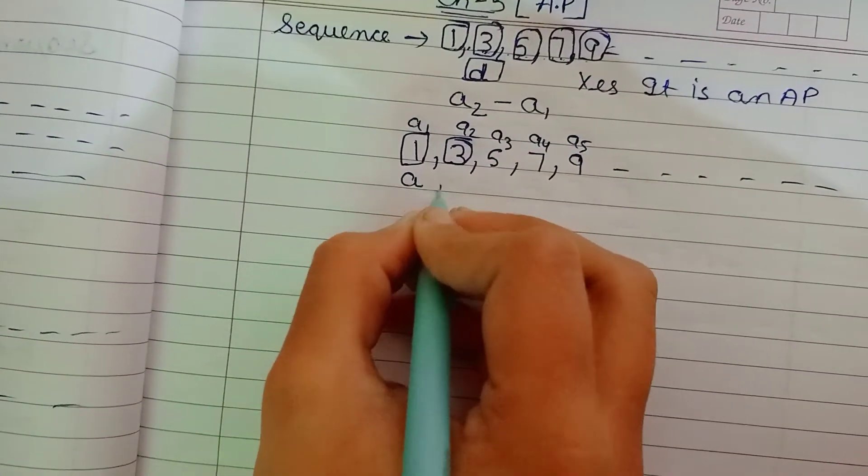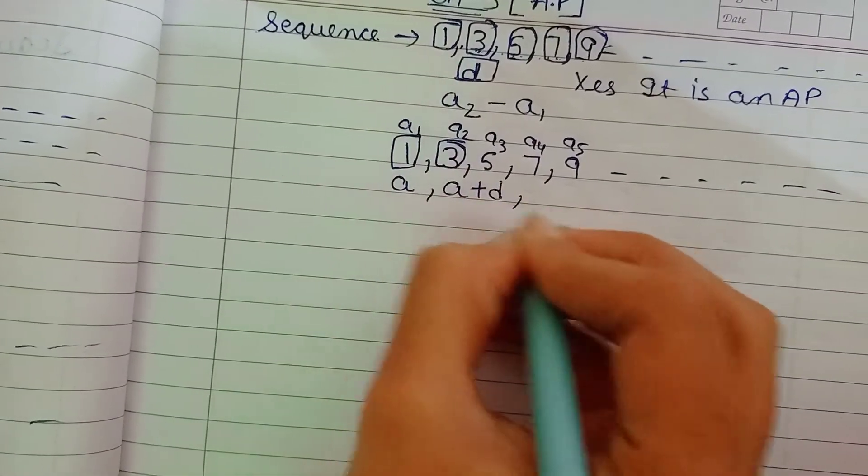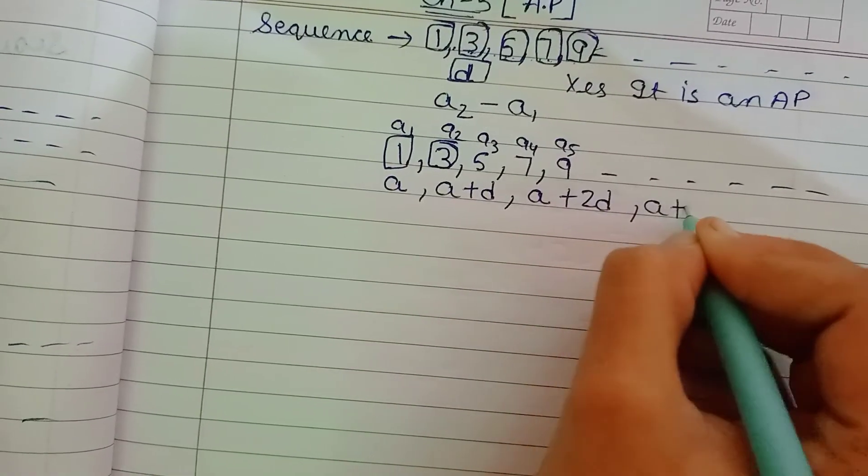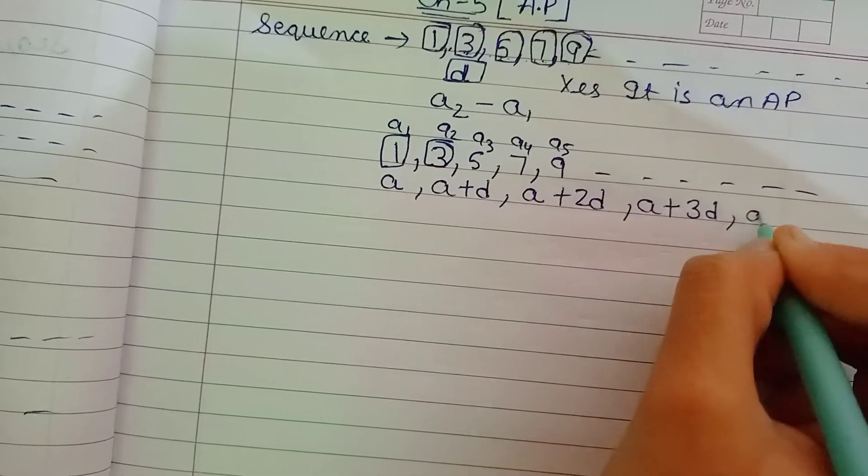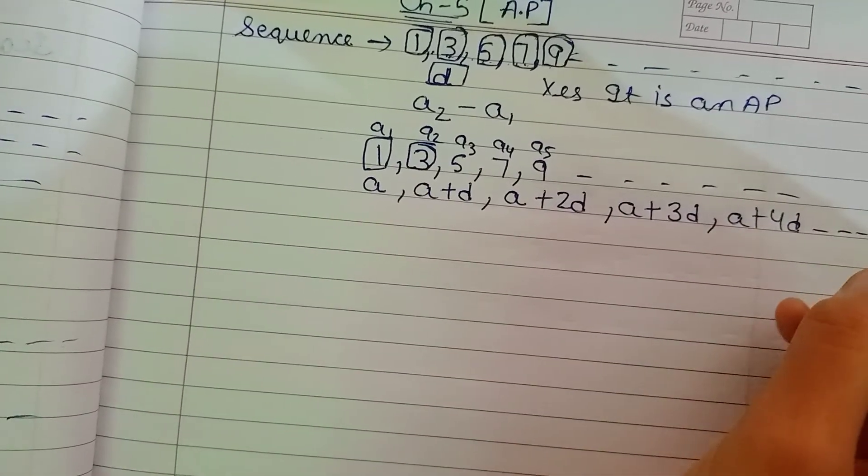But when we get the difference, how do we get the terms? A plus d, a plus 2d, a plus 3d, a plus 4d. If we get 4d, then we get 5 AP.